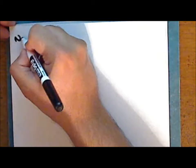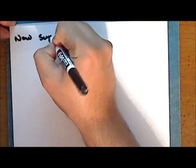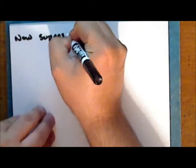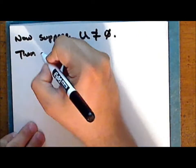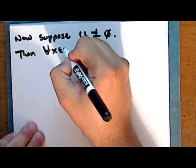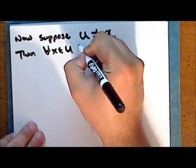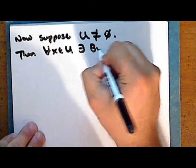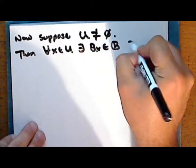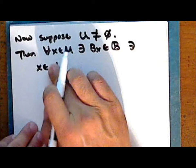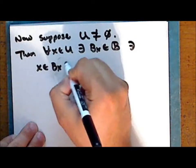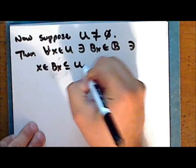Now suppose that the open set U is not the empty set. Then for every point x in the set U, there exists an element B_x in the collection script B such that the point x is in this element B_x, which is a subset of the set U.